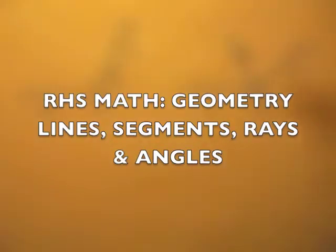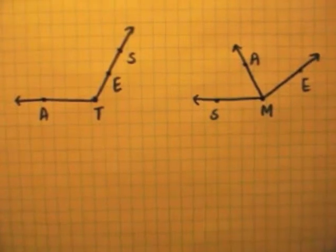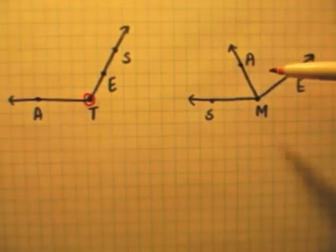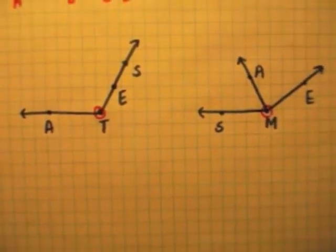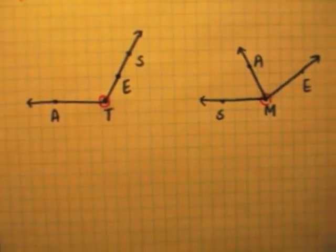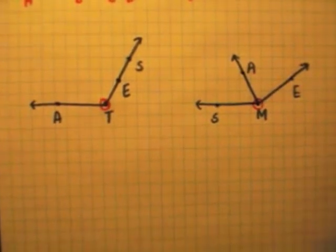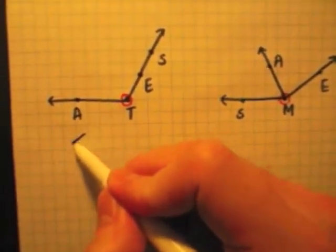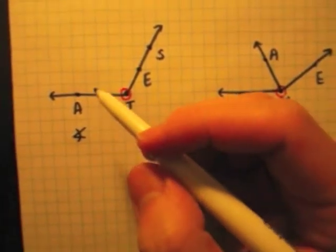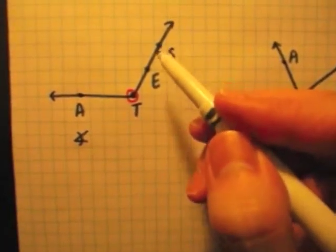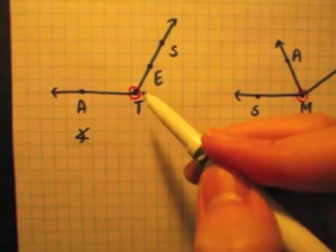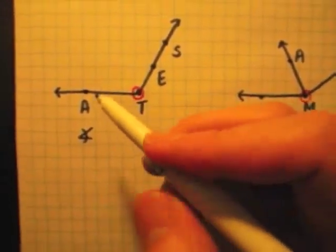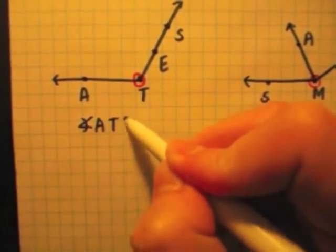Labeling angles is pretty straightforward — you just have to be able to locate the vertex of the angle. In this angle, the vertex is T, and in this other angle, the vertex is M. Traditionally, you use three letters to name an angle, where the vertex is in the middle. So for the first angle, I draw a little angle sign and pick three letters that make the angle with the vertex in the middle. I can go ATÉ, ATS, ETA, or STA. I'll go with ATS.